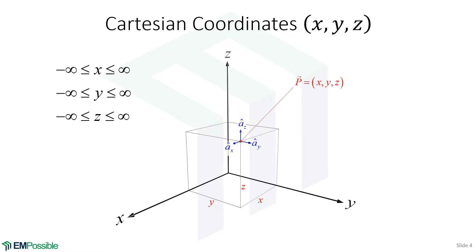The values of XYZ can be anything from minus infinity all the way up to positive infinity. We need unit vectors that point in the XYZ directions, shown here as the blue arrows. Unit vectors have a magnitude of 1. The unit vector in the X direction points parallel to X, the unit vector in the Y direction points parallel to the Y axis, and the unit vector Z is parallel to the Z axis.